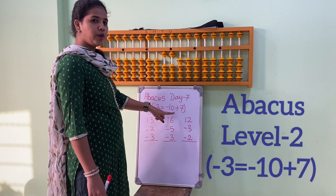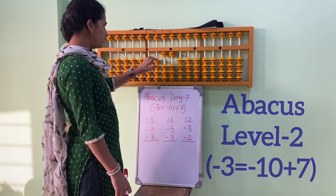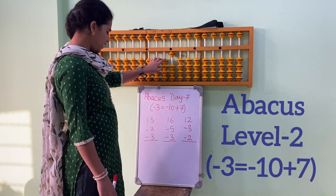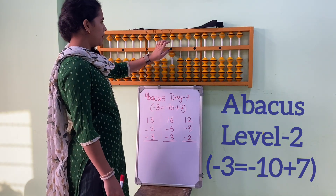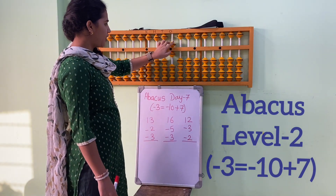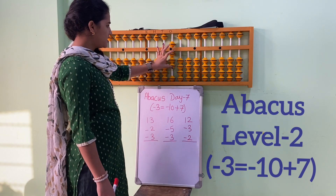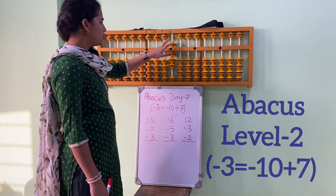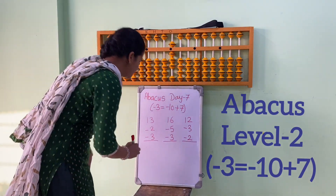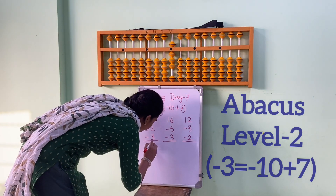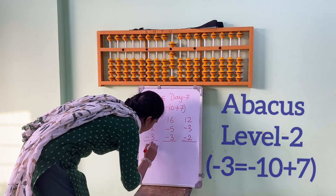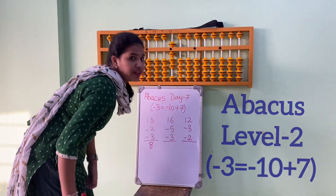So what is the formula of minus 3? Minus 10 plus 7. 5, 6, 7. So the answer is 8. In the 1st place we have 8.